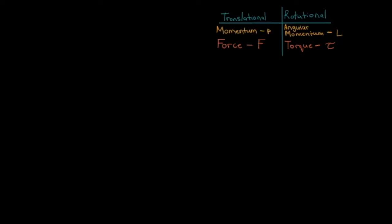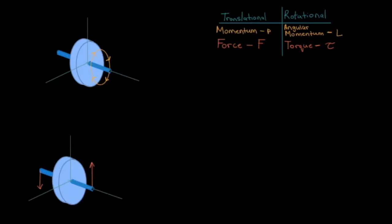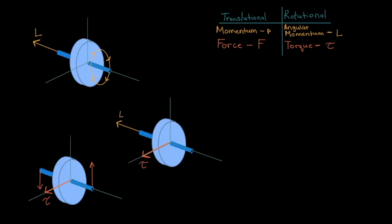Here's another example. The wheel is spinning this way and it's torqued this way — determine which way the wheel will precess. Step one: find the angular momentum using the right hand rule. Step two: find the torque, also using the right hand rule. Step three: the angular momentum pivots to follow the torque.